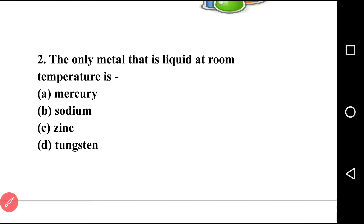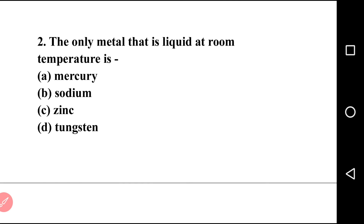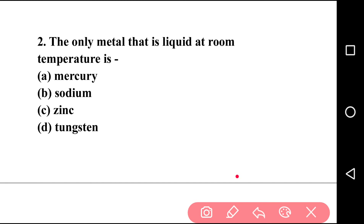Going to the next question. The second question is: the only metal that is liquid at room temperature. There are four options: mercury, sodium, zinc, tungsten. The right answer is option A, that is mercury. Everyone knows that mercury is a liquid metal, which is used in thermometers to measure body temperature.